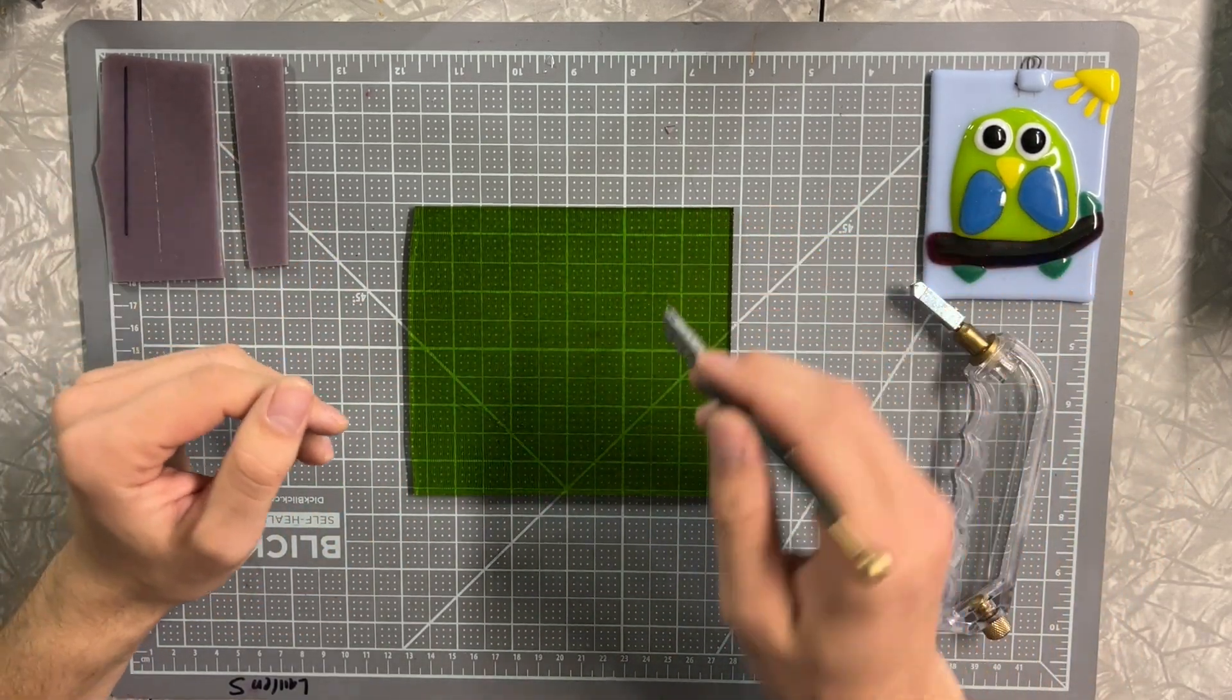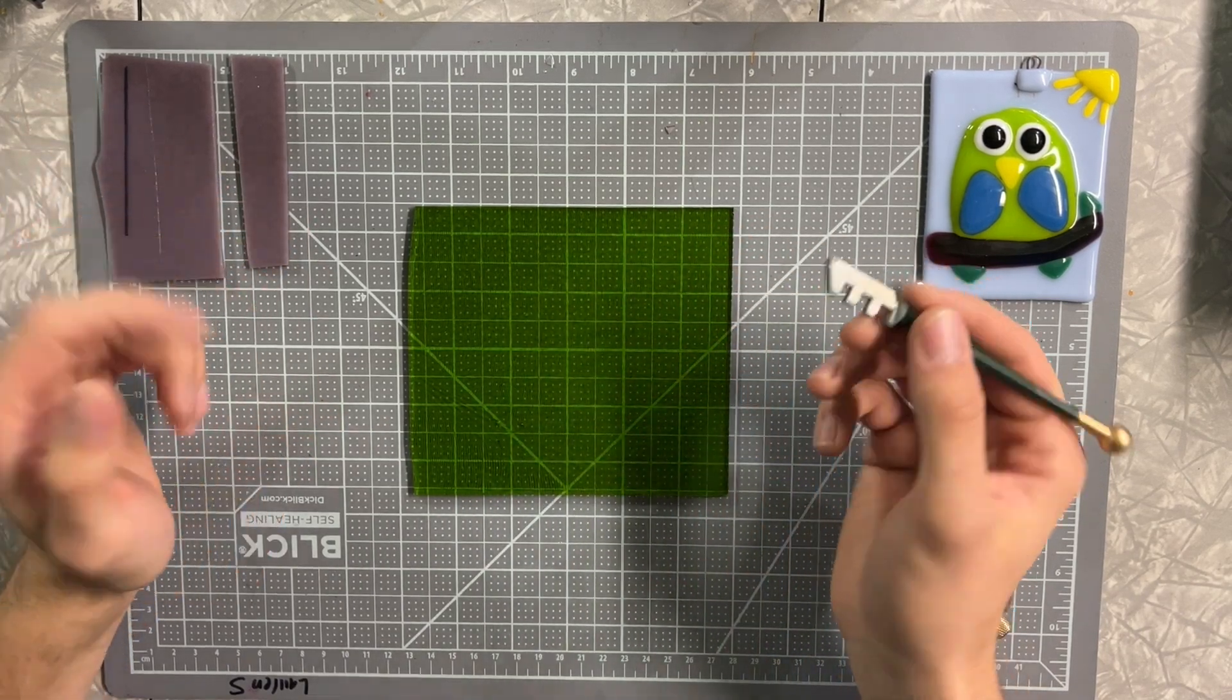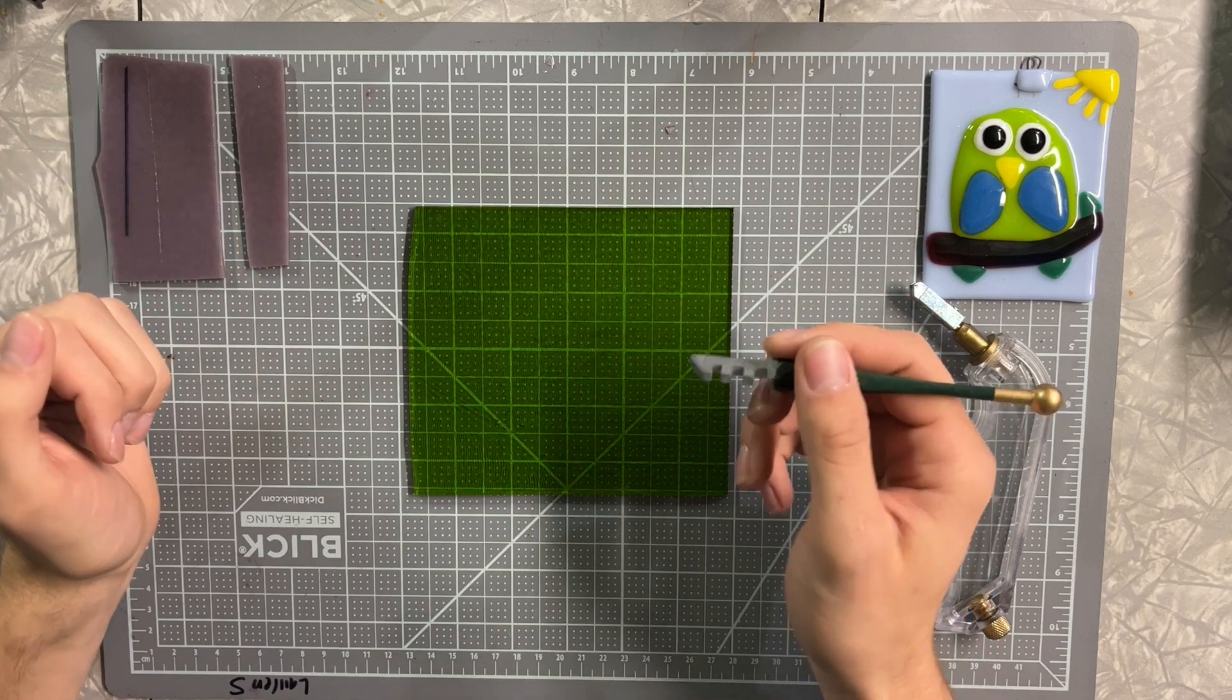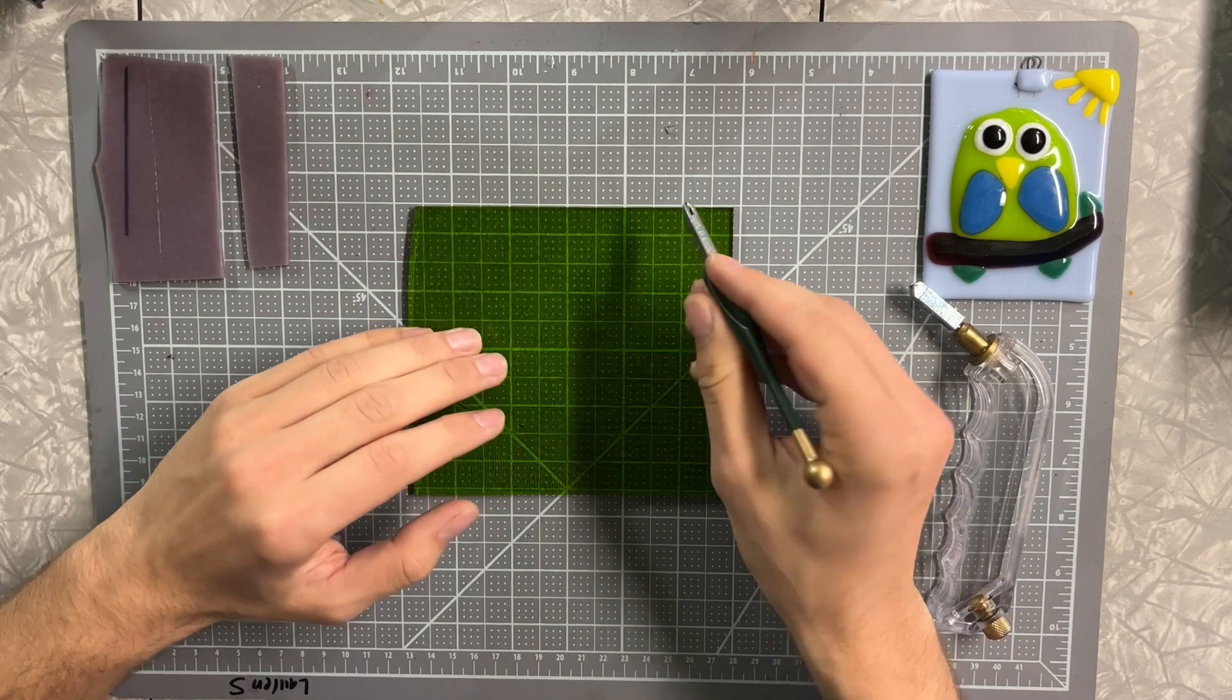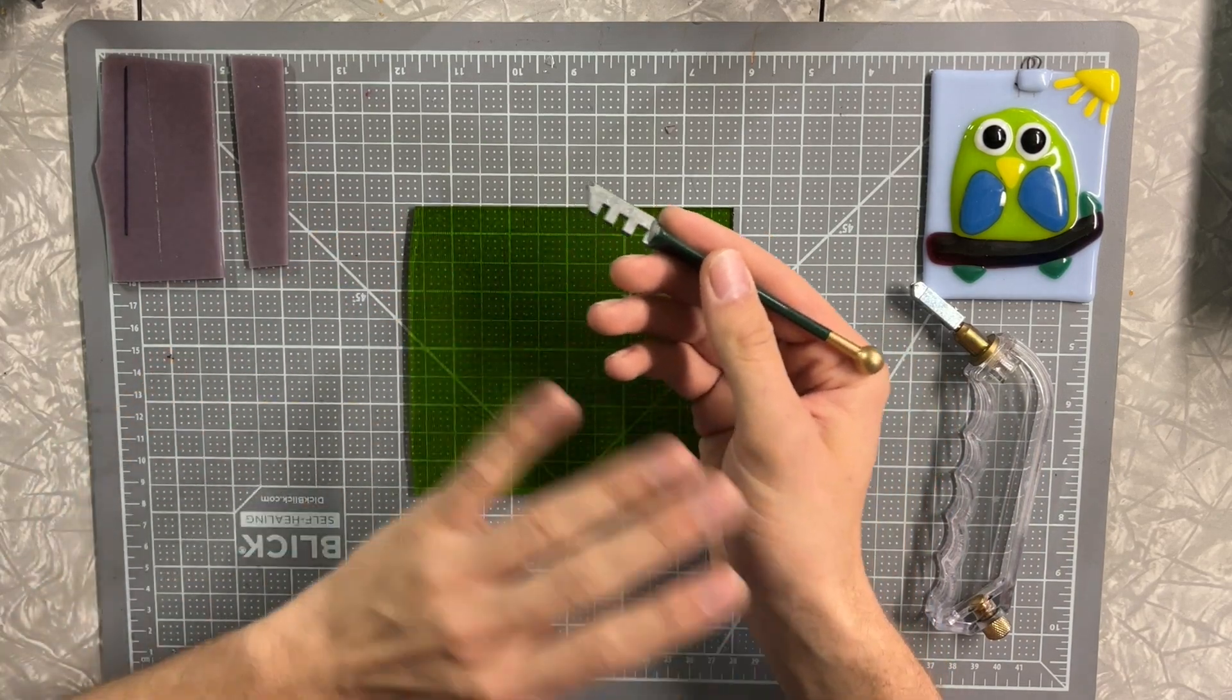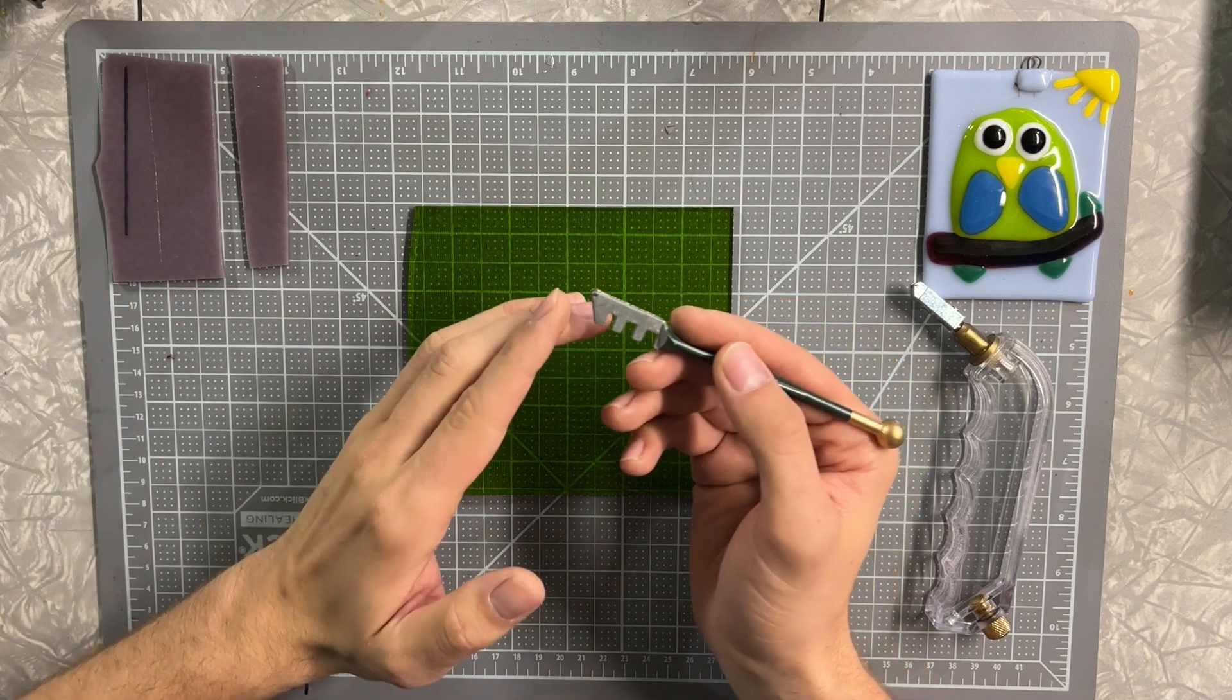You can cut glass by either pushing away from you or pulling towards you. I use both techniques. I'll go ahead and just pull towards me for the sake of the video here.